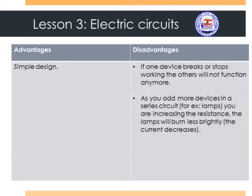The second disadvantage is that when you add more devices in a series circuit, it means that you are increasing the resistance. Because as we previously explained, each device has its own resistance. And when we increase the resistance, we are decreasing the current. Decreasing the current means that the devices will not function normally. For example, if the series circuit is made from lamps, these lamps will not burn brightly — they will be less bright.